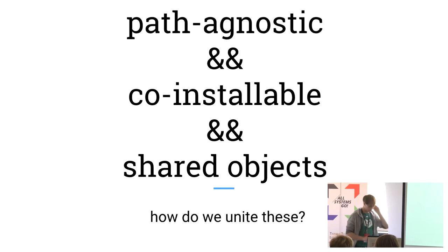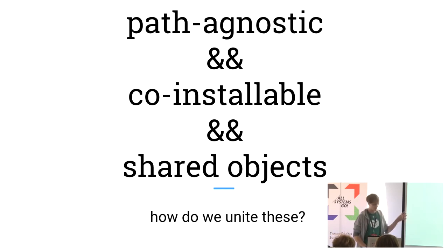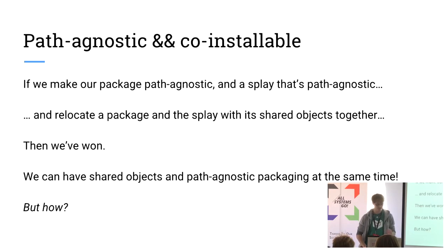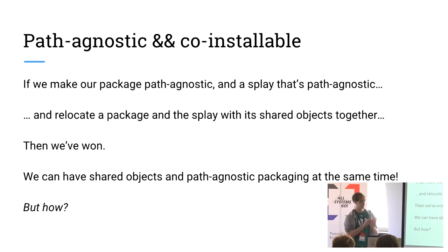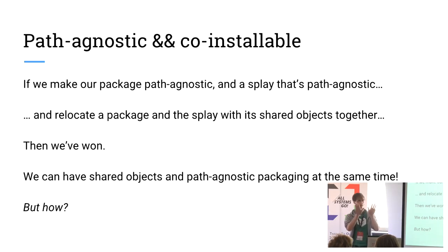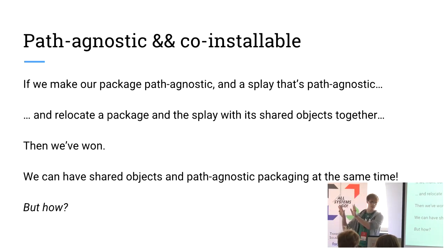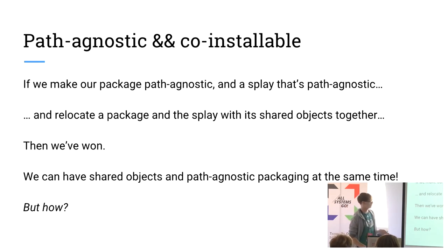Now I want to get all of these properties back together. I want to have path agnostic, co-installable, and shared objects. If we could have some binaries that are path agnostic, and we could have a splay of all of their dependencies that is also path agnostic, then we could move both of these things around together and they would still be path agnostic, still have shared objects, and everything would be awesome.